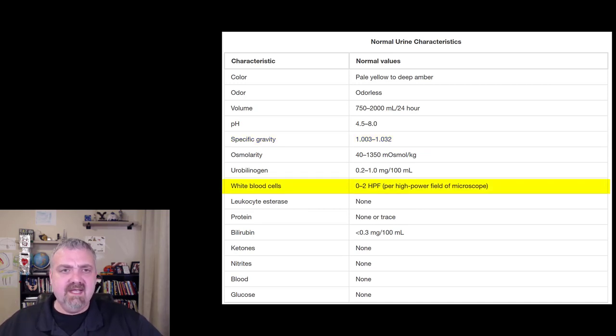White blood cells, you shouldn't be seeing any leukocytes or white blood cells in your urine. If you do, that's evidence of a urinary tract infection. They're not excreted in the urine. They're going to be there fighting a UTI somewhere in your urinary tract.